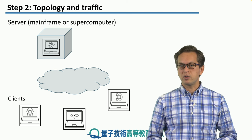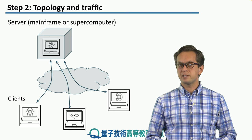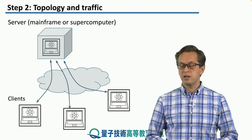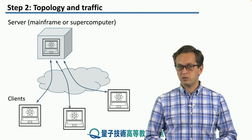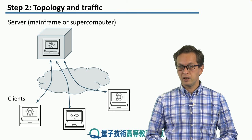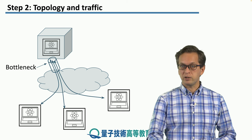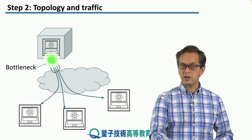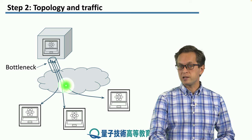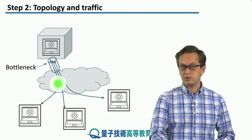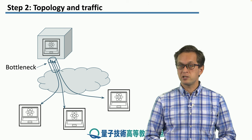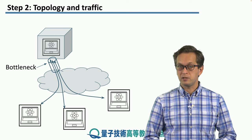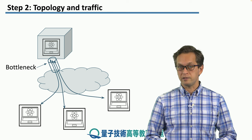So we were thinking about it as three separate connections between each client and the mainframe. But in fact, this is not going to be true in the real world. In the real world, the connection that's shared between the network and the mainframe is most likely going to be one — the same connection. So this will create a bottleneck for the different conversations, for the different traffic patterns that the mainframe is sharing with the clients.